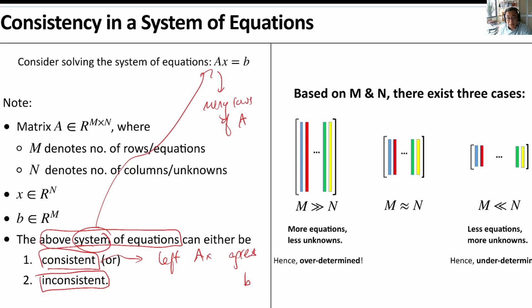So, if it is agreeing, AX equals to B, then we have a consistent equation. And if it doesn't agree for whatever reason, and we will see it later, then it is called an inconsistent equation.